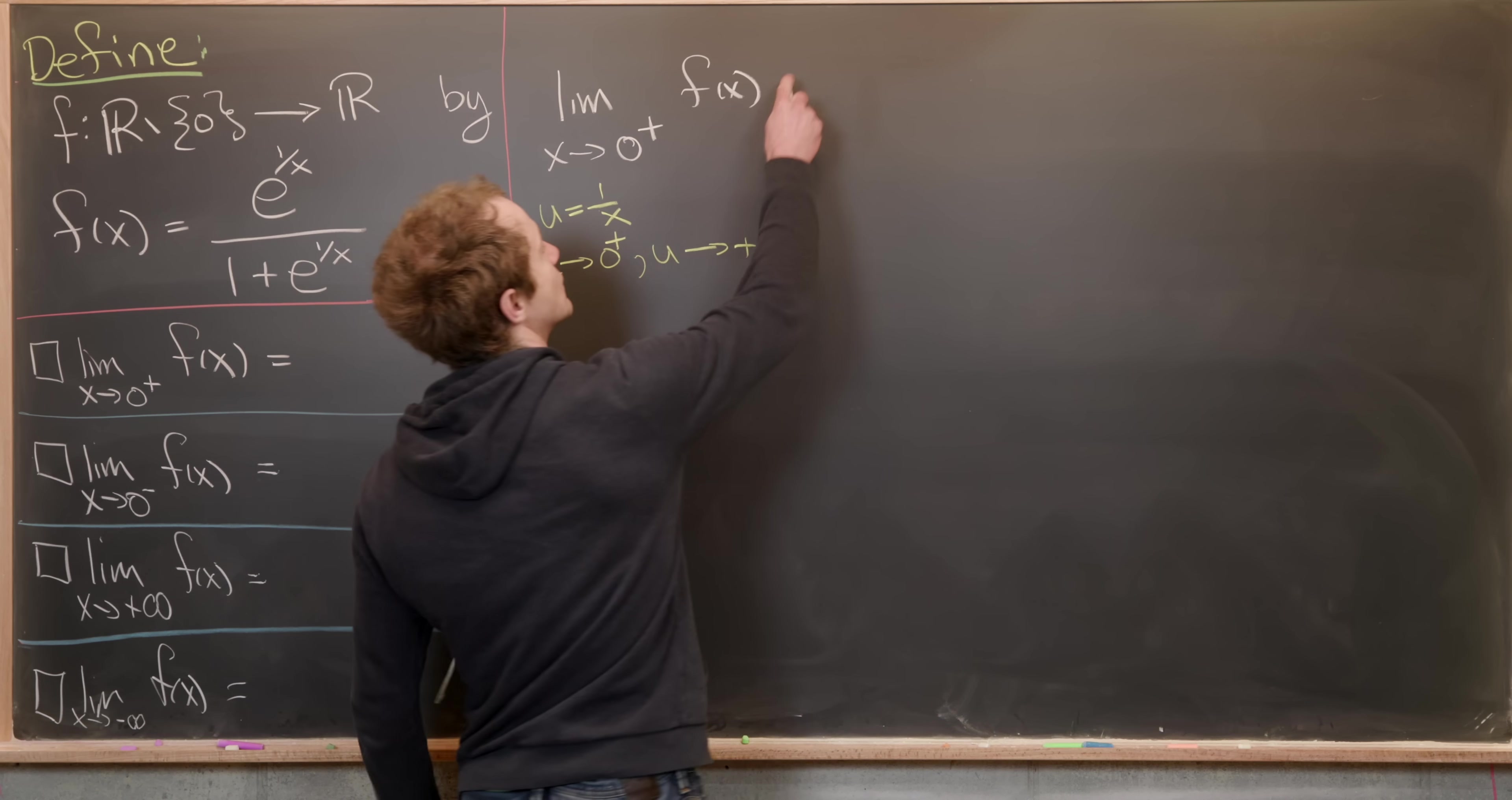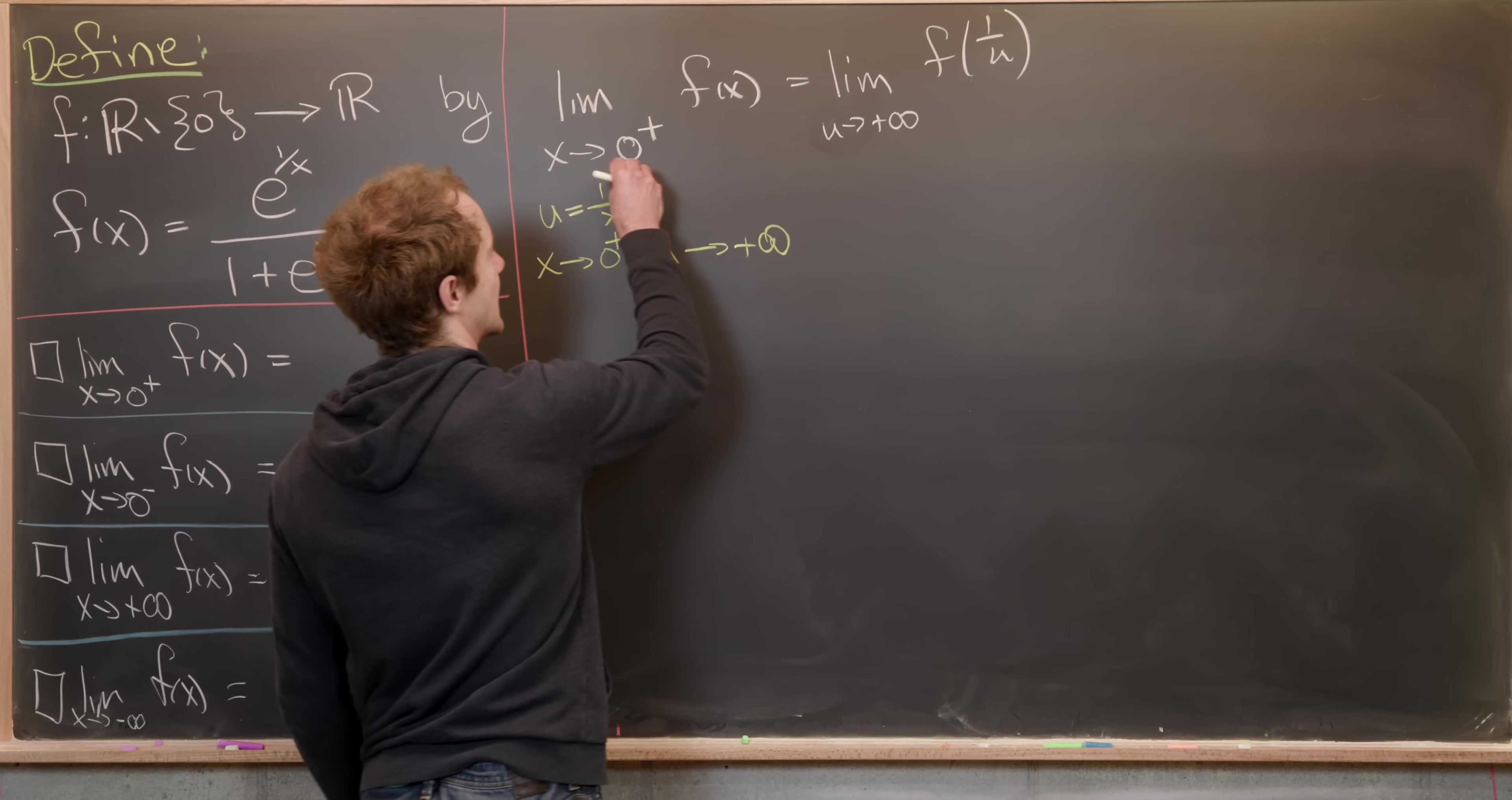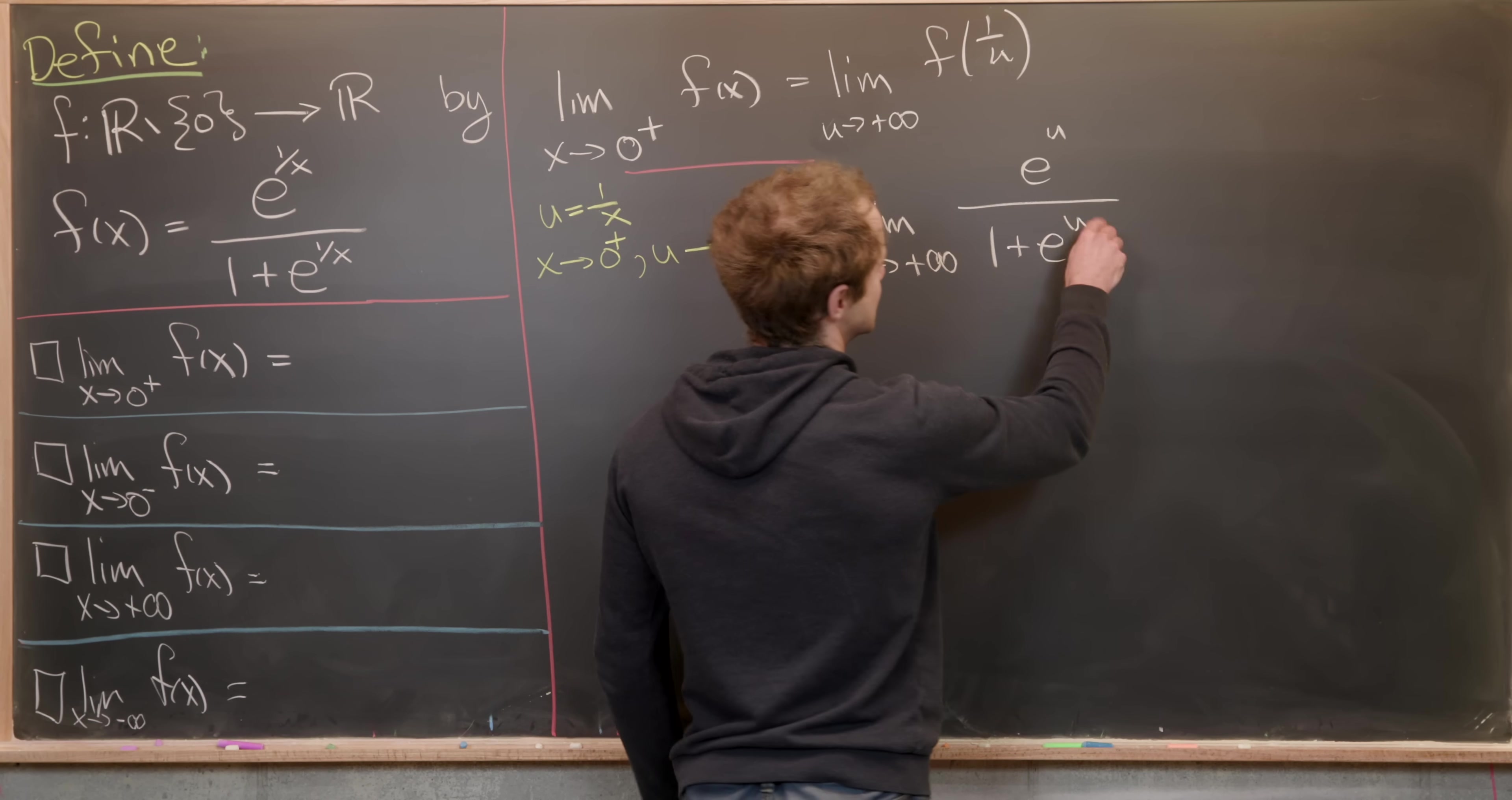So that means we can rewrite this as the limit as u goes to positive infinity of f of one over u, because if u is one over x, then x is one over u, like that. Okay, nice. Now let's go ahead and plug that into the function as defined here and see what we get. So this is going to be the limit as u goes to positive infinity of e to the u over one plus e to the u.